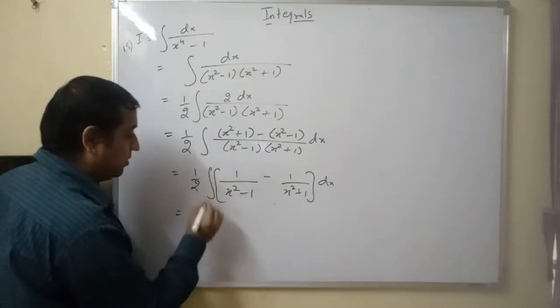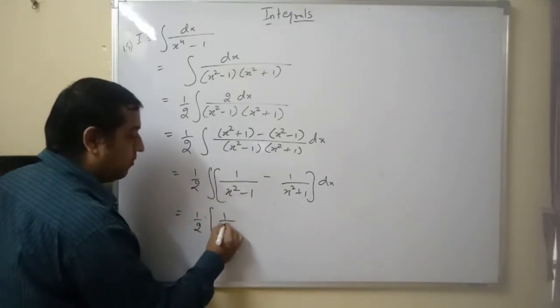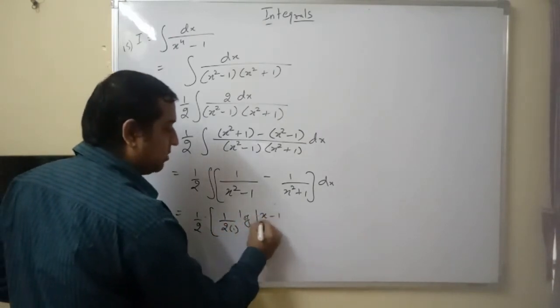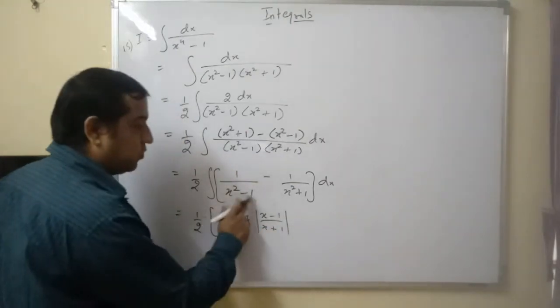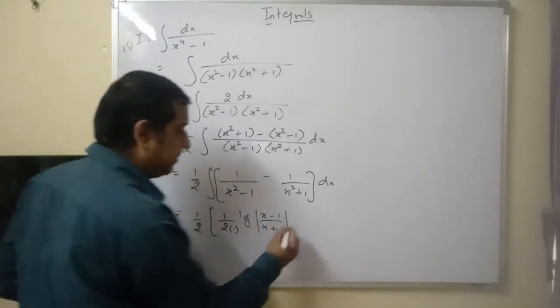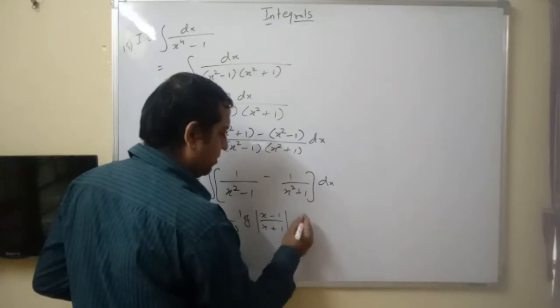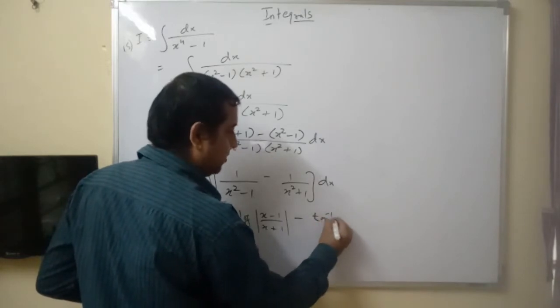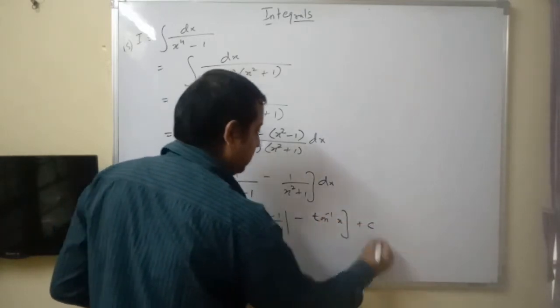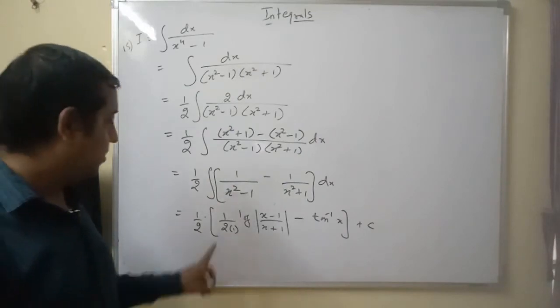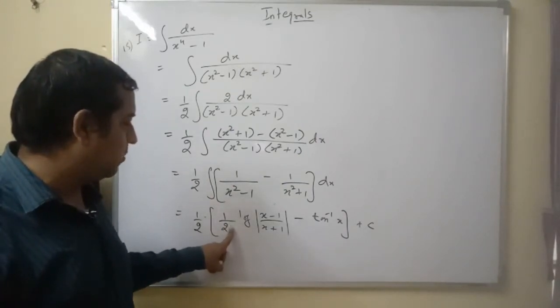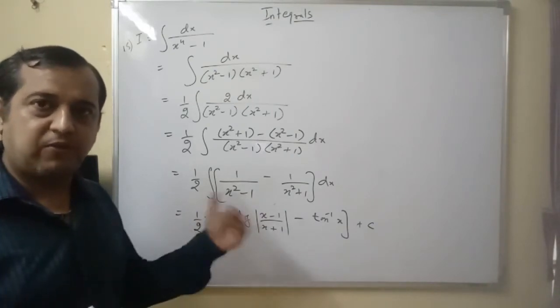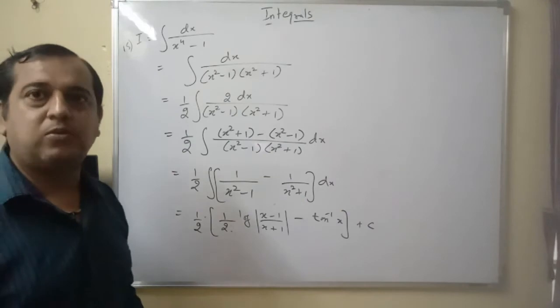This gives you 1 by 2. Now you can solve these very easily. This is 1 upon 2a log mod x minus a upon x plus a. This is the formula for x square minus a square, where a equals 1. Minus 1 by a, which is 1 by 1. Tan inverse x square plus x square plus c. This is the answer. 1 by 2a means this becomes 1 by 2. So this is your answer. You can solve this in a very easy way. It's not necessary to go into partial fractions and solve from there only.